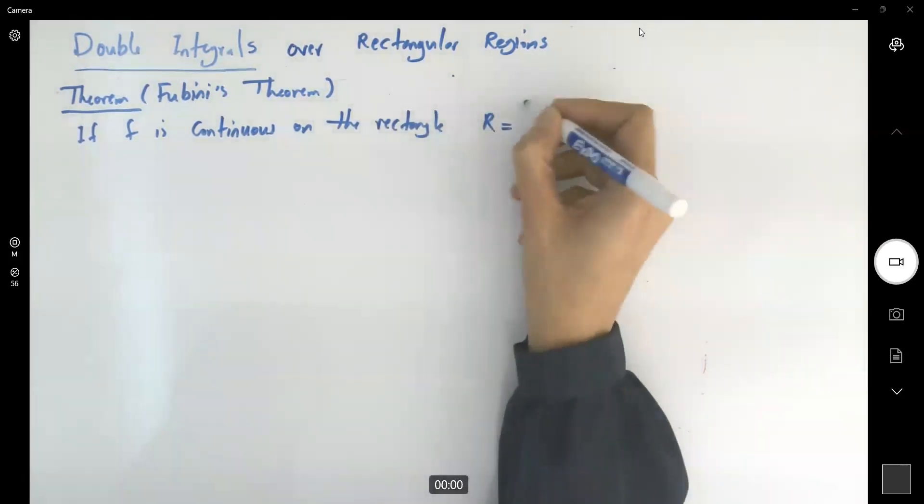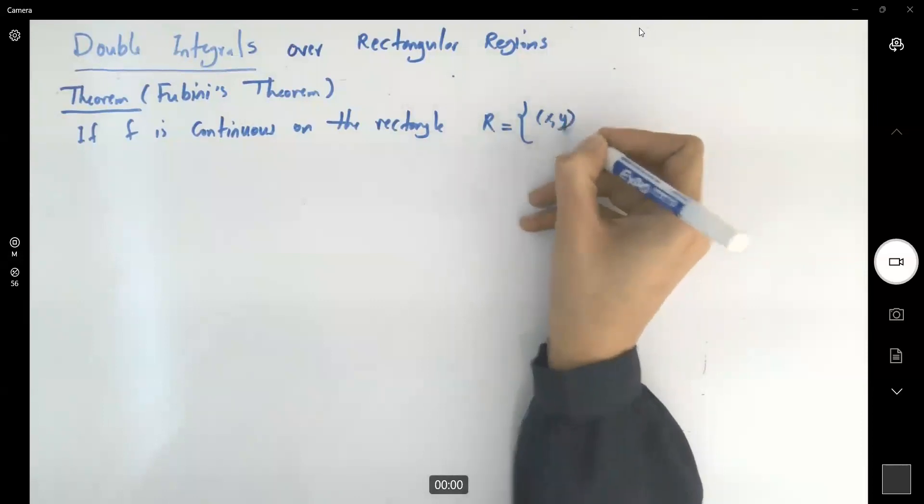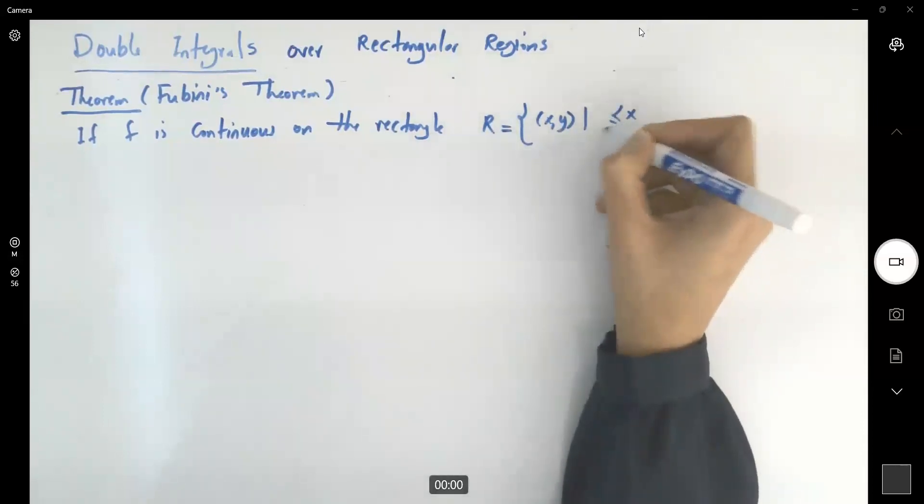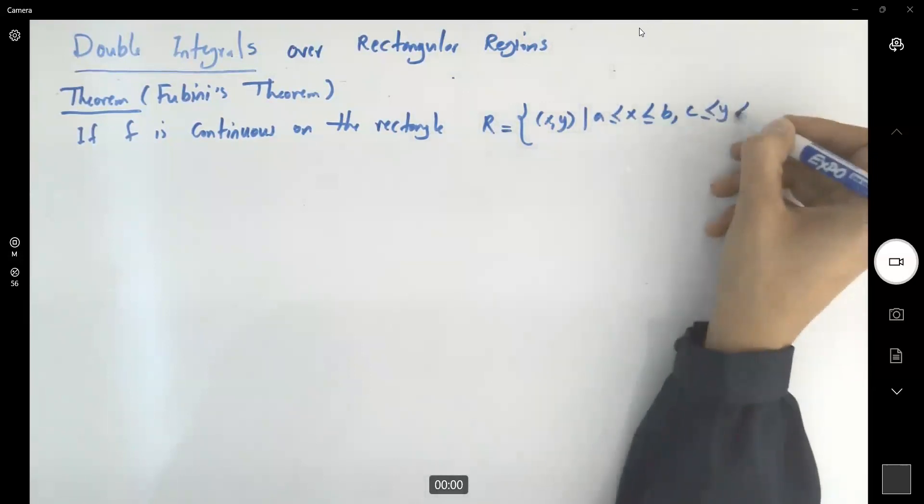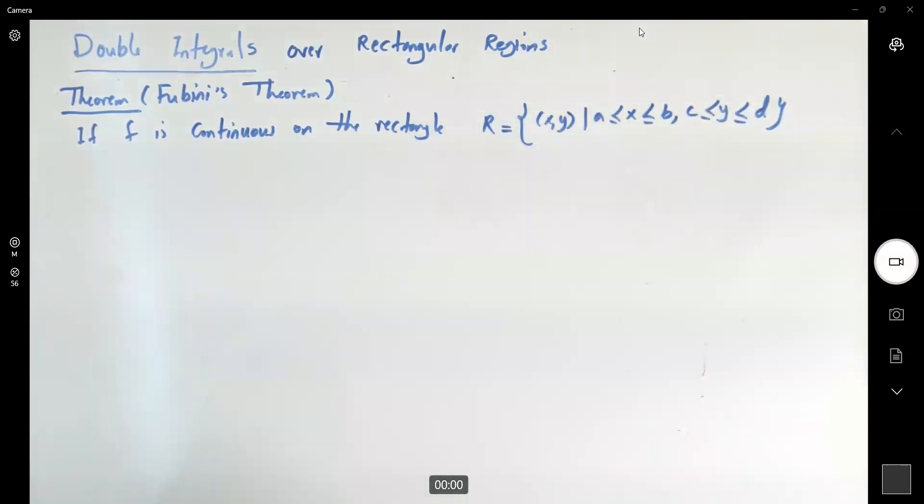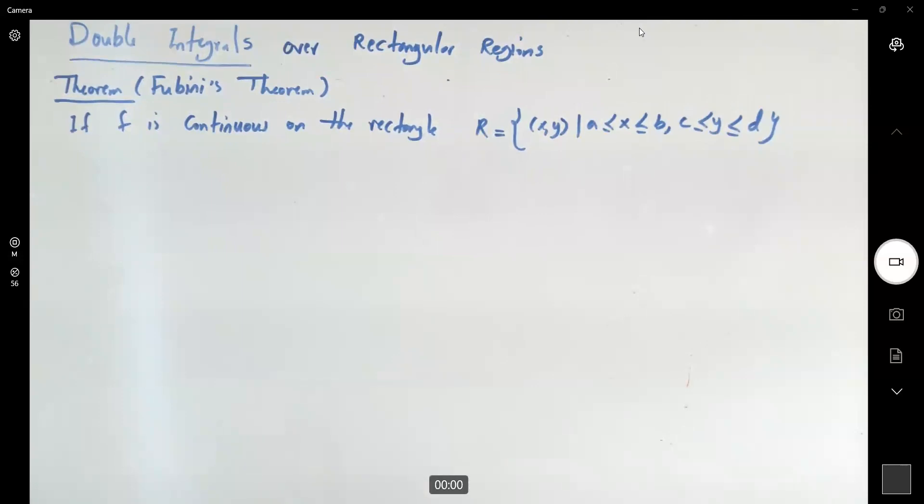R equals all x and y's such that x is bounded between a and b, and y is bounded between c and d. If you have the following condition for the function to be continuous: